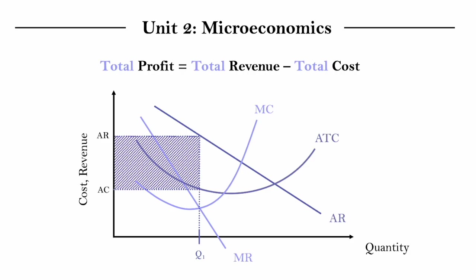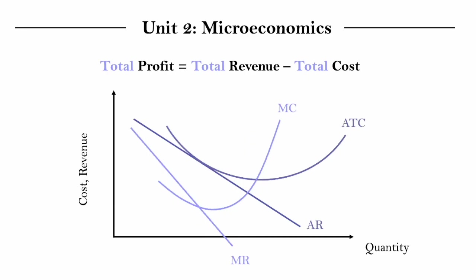And now I want us to take a look at an alternative scenario. In here, all I've done is I've just shifted around the position of the curves a little, and I want us to look at the profit maximization point on this diagram, where MC intersects MR. And I'll call this quantity Q2.